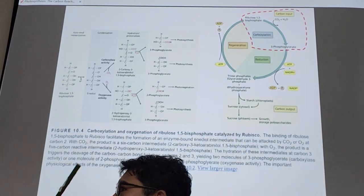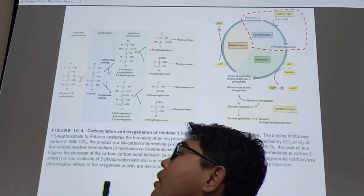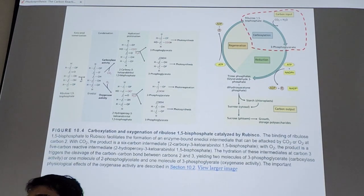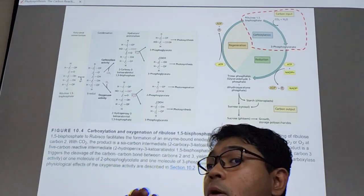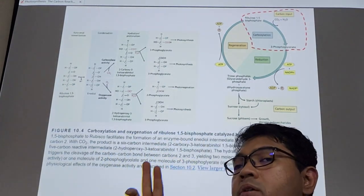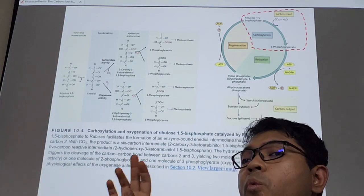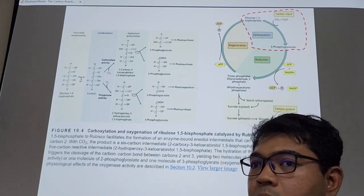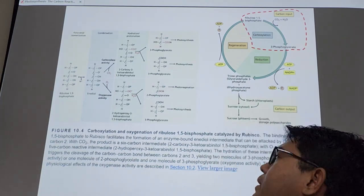When it's too acidic, CO2 cannot attach to RuBisCO properly because it's competing. That's the keyword: CO2 competing with oxygen for the catalytic site of RuBisCO. As simple as that.